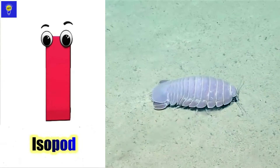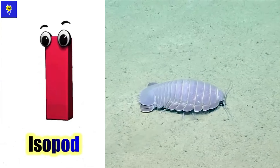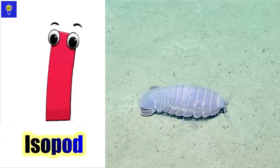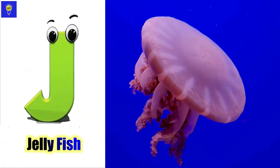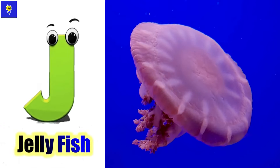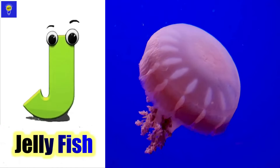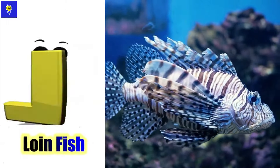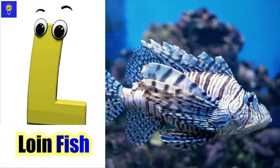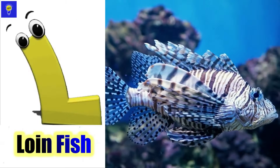I is for isopod, eh, eh, isopod. J is for jellyfish, juh, juh, jellyfish. K is for koi fish, kuh, kuh, koi fish. L is for lionfish, luh, luh, lionfish.